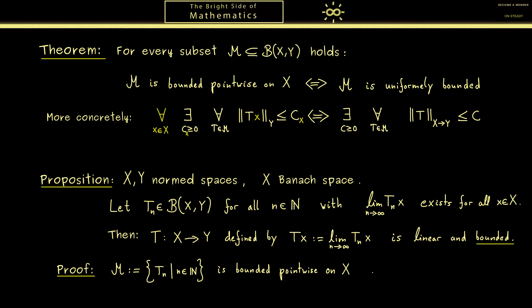Hence we are allowed to use Banach-Steinhaus which means we find such a constant c on the right hand side. So we have the constant c such that the operator norm of T_n is bounded by c for all n.